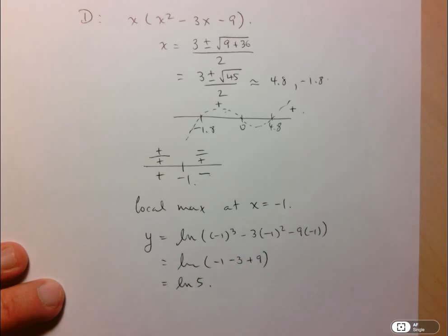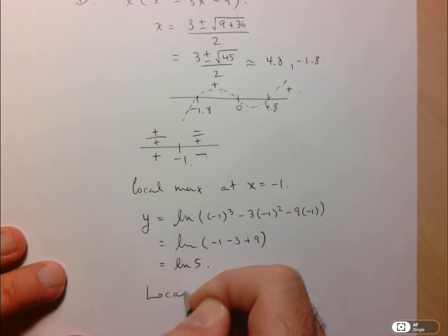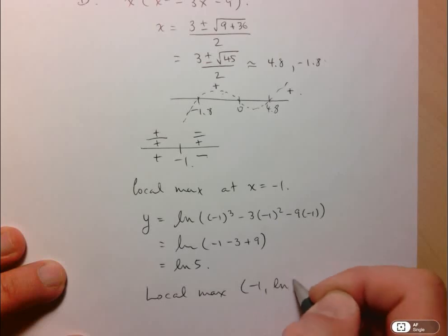Now since this is going to be an irrational number, I'm going to leave it as is. So the point at which we have our local max is at negative 1, ln 5.